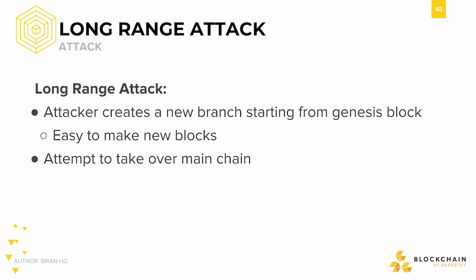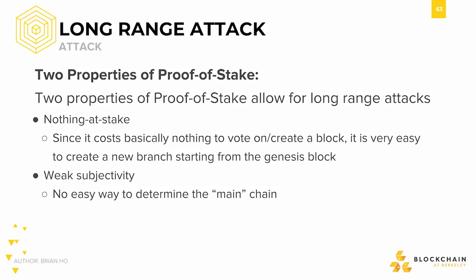One major attack that can be conducted in a proof-of-stake network is a long-range attack. In this scenario, attackers essentially create a new chain of transactions starting from the genesis block, then attempt to take over the main chain. There are two properties in proof-of-stake that allow this: nothing at stake and weak subjectivity. Nothing at stake allows for long-range attacks due to the costless nature of creating a branch. Weak subjectivity means that when a new node joins a proof-of-stake network, the only block accepted is the genesis block, and nodes are given all published chains, making it difficult to choose the main blockchain. Weak subjectivity is a problem both for new nodes and nodes that come online after being offline for long periods of time.